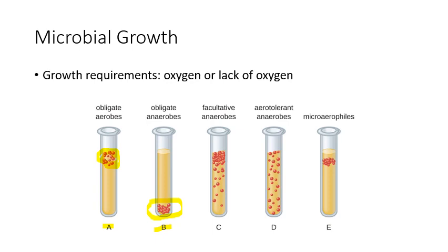Facultative anaerobes can tolerate being in an anaerobic environment, but they don't necessarily want to live that way — they like oxygen, so you'll see more of them clustered near the oxygen with a few down in the anaerobic region. Aerotolerant anaerobes don't need oxygen but they're aerotolerant, meaning they can handle it and aren't bothered by oxygen at all, so we can find them all throughout the tube. Microaerophiles are a specific type that want a low level of oxygen — not too high, not too low — kind of like the Goldilocks layer of oxygen they can tolerate.